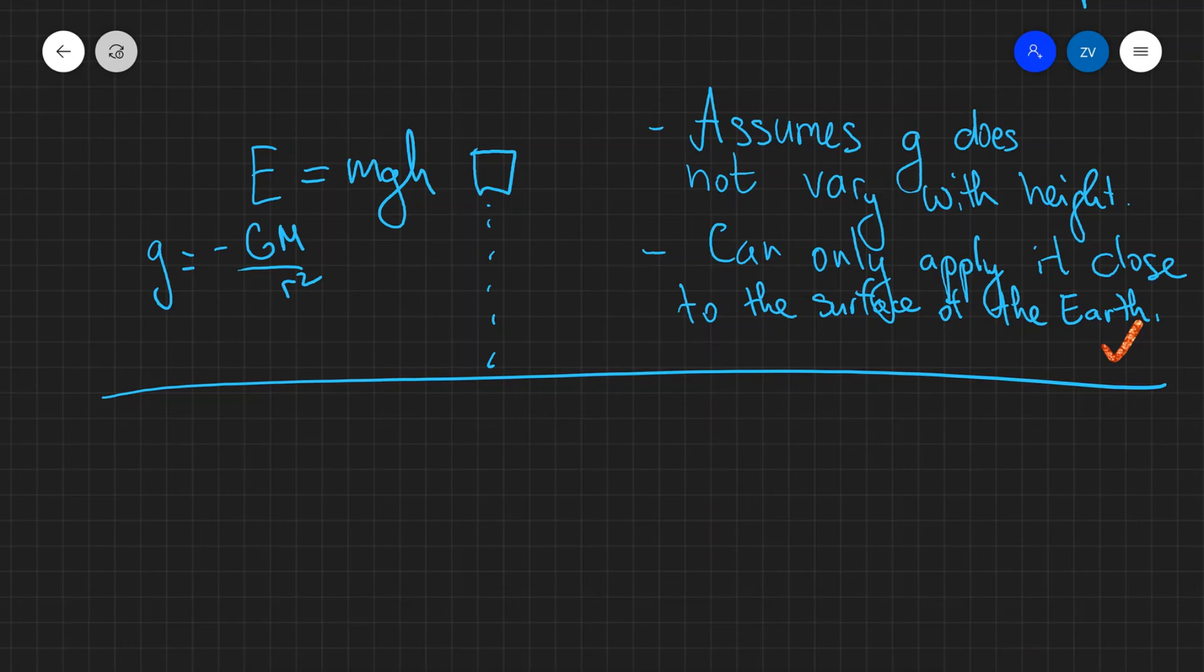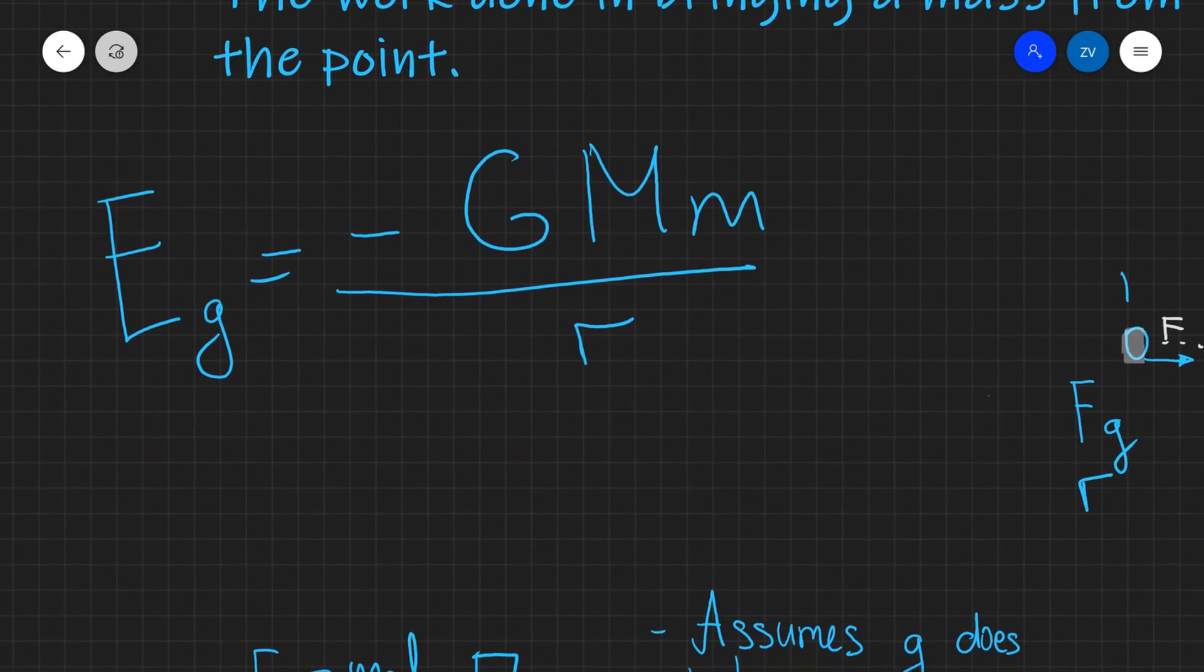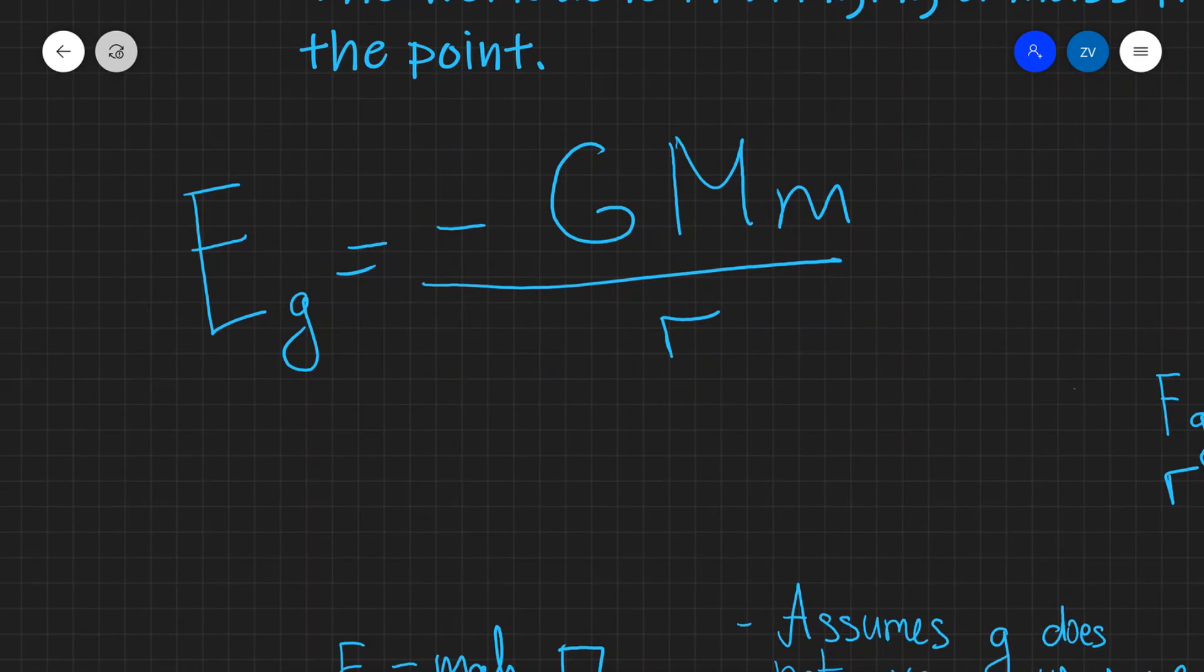In fact, if we were dealing with two objects on a more planetary scale, then we'll need to apply the new equation that we've just learned, that the gravitational potential energy is equal to minus GMm over r.